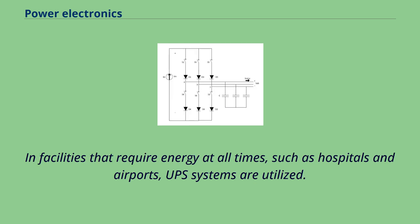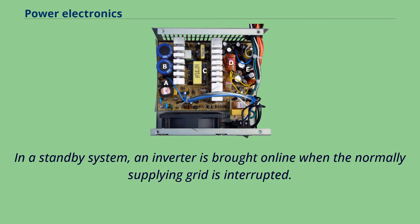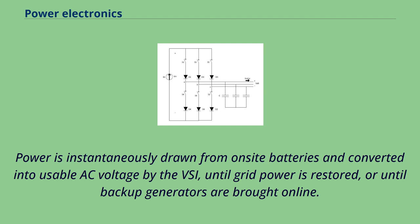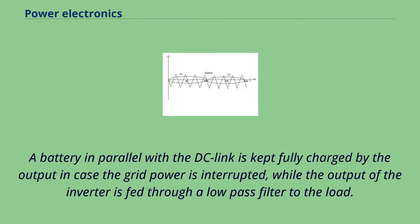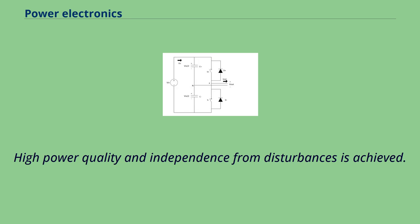In facilities that require energy at all times, such as hospitals and airports, UPS systems are utilized. In a standby system, an inverter is brought online when the normally supplying grid is interrupted; power is instantaneously drawn from on-site batteries and converted into usable AC voltage by the VSI until grid power is restored or backup generators are brought online. In an online UPS system, a rectifier-DC link-inverter is used to protect the load from transients and harmonic content. A battery in parallel with the DC link is kept fully charged in case the grid power is interrupted, while the output of the inverter is fed through a low-pass filter to the load, achieving high power quality and independence from disturbances.